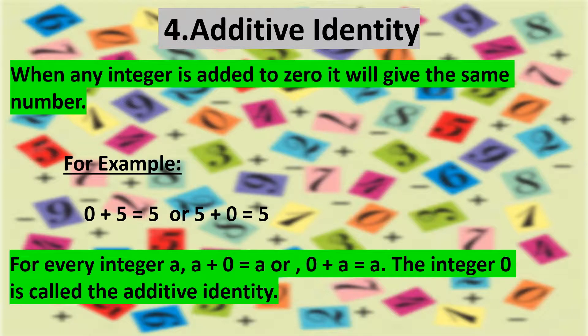So for every integer A, A plus 0 is equal to A or 0 plus A is equal to A. The integer 0 is called the additive identity.